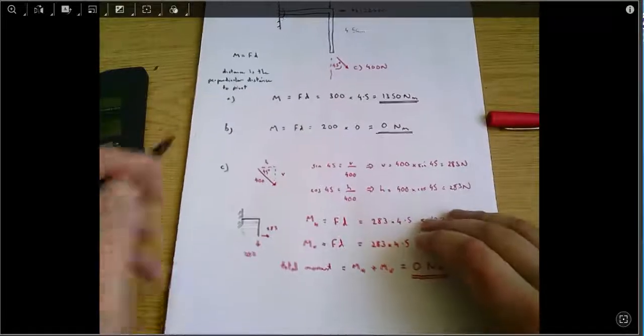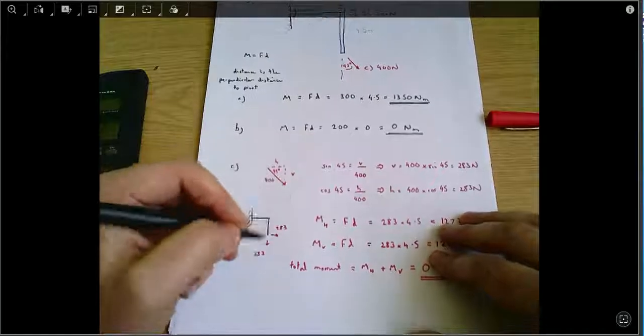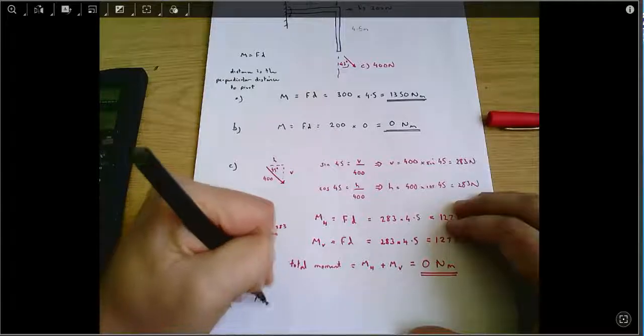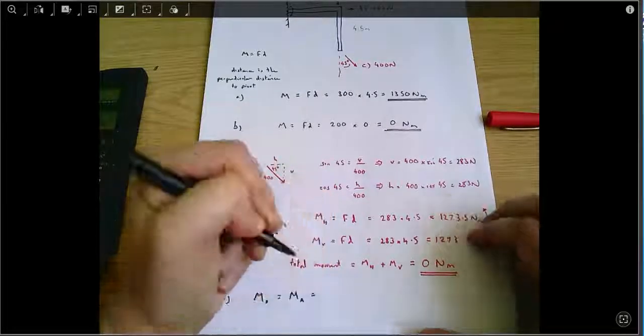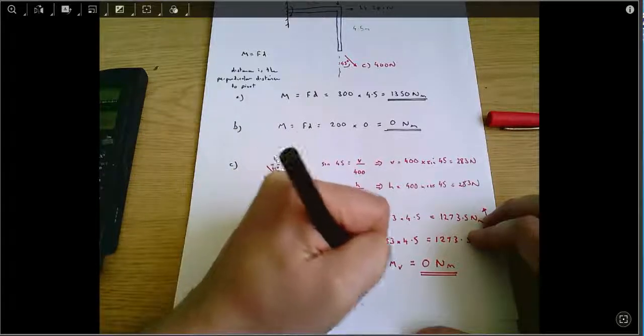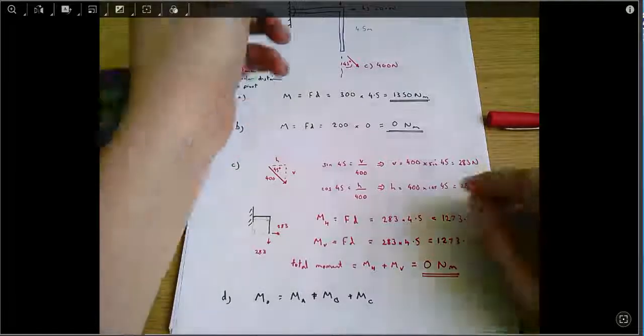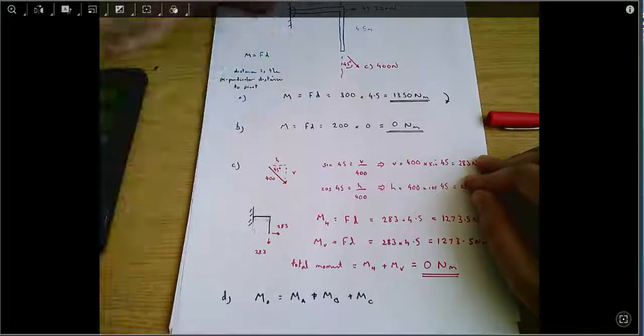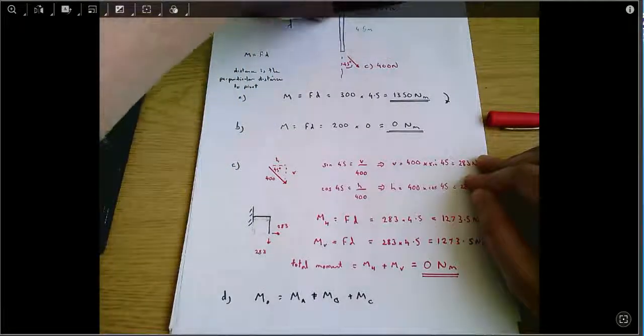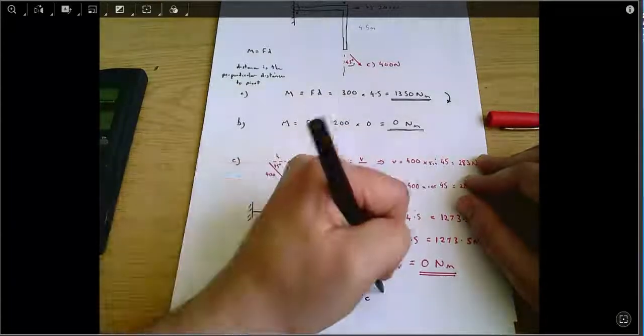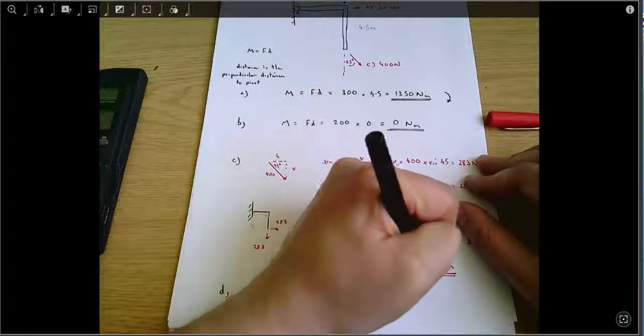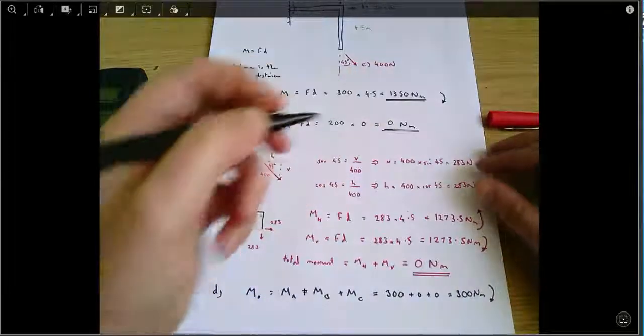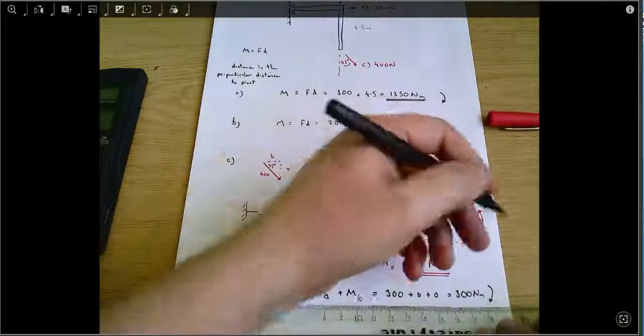And finally, in part D we were asked, what is the total moment about O? Total moment about O equals the moment due to A plus the moment due to B plus the moment due to C. I've realized, by the way, I should probably have been clear with this moment due to A, it's clockwise, it's tending to rotate. If you imagine that this arm is at three o'clock, the force is pushing it towards four o'clock. So this is 300 plus zero plus zero, which equals 300 Newton meters. And that's also clockwise, since the moment of A is the only moment that we're including.